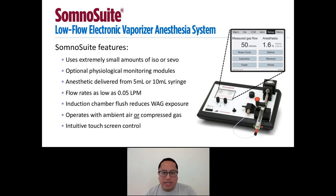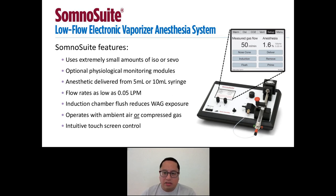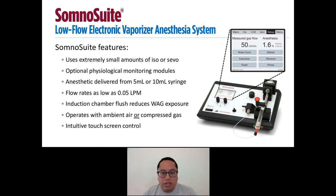The SomnoSuite has an intuitive touch screen control. Both the flow rate and anesthesia percentage are displayed in large numbers. Along the top are tabs for the additional modules that can be added to your SomnoSuite. The Remove button is used when you need to fill your syringe. The glass syringe itself is filled with the anesthetic such as isoflurane. The Prime button is used for preparing the pusher block to deliver the anesthesia. When you are ready to anesthetize your animal, you will touch the Deliver button to deliver the anesthesia plus either the nose cone or induction buttons to turn on the flow. The Flush button will add a layer of air with no anesthesia to reduce waste gas exposure to the user.